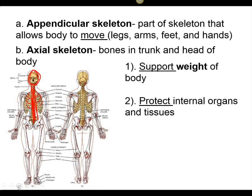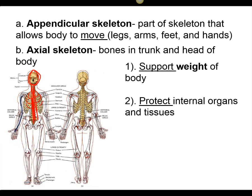And then we have our appendicular skeleton, which is our appendages — our hips and our legs, ultimately our arms and legs. These two skeletons together support our weight and protect our internal organs.